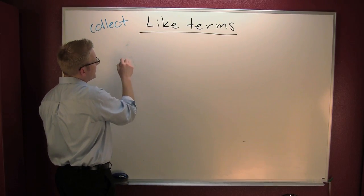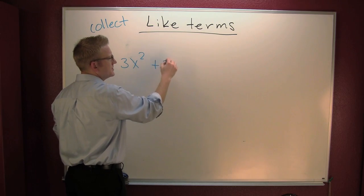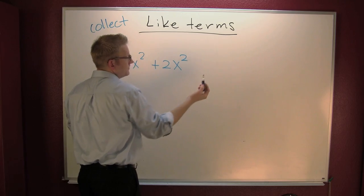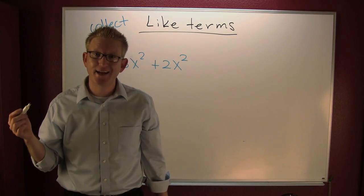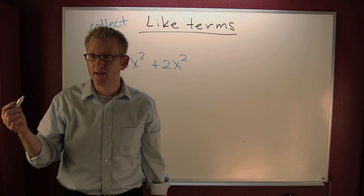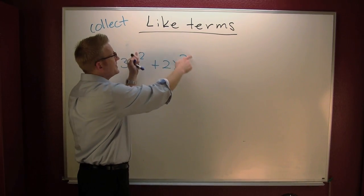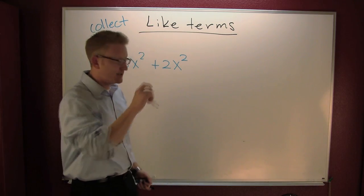Here we got three x squared plus two x squared. Are those like terms? Like terms are terms with exactly the same variables raised to exactly the same powers. Both of these have x as their variable and both of them are raised to the second power. So yes, we have like terms.